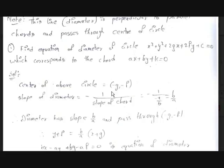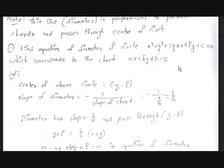We know the center is (−g, −f). We need the slope of the diameter. Since the diameter is perpendicular to the chord, the product of their slopes equals −1, so slope of diameter = −1 ÷ slope of chord. The slope of the chord ax + by + k = 0: rearranging gives y = (−a/b)x − k/b, so the slope is −a/b. Therefore, slope of diameter = −1 ÷ (−a/b) = b/a.